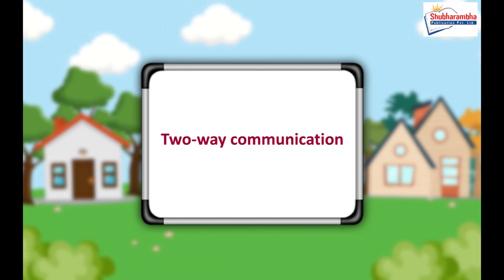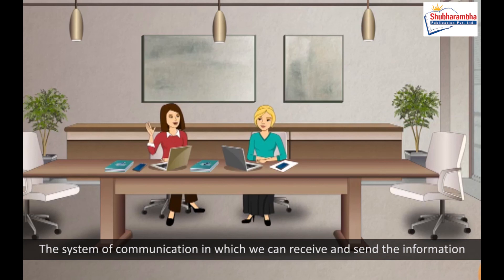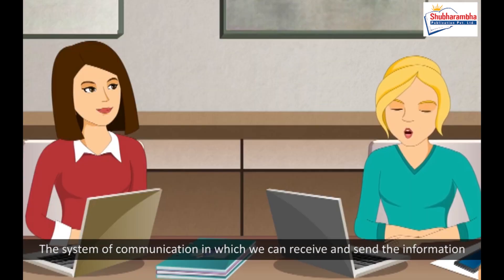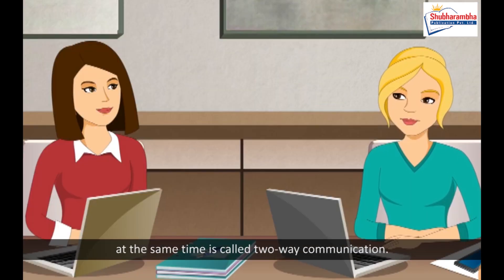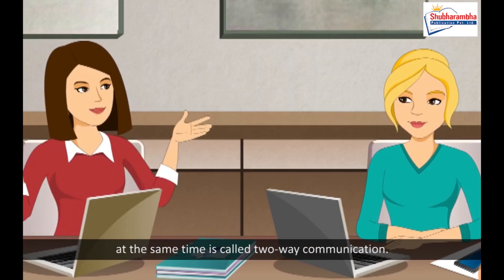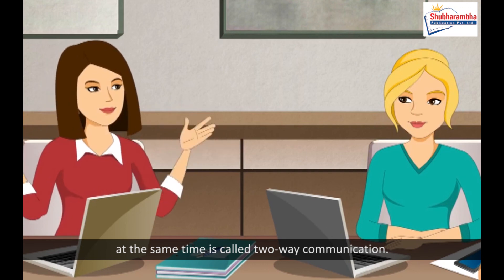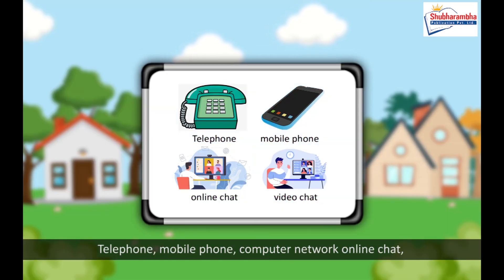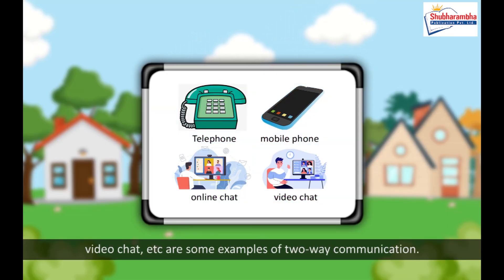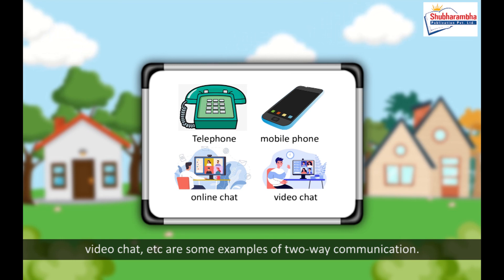Two-way communication. The system of communication in which we can receive and send information at the same time is called two-way communication. Telephone, mobile phone, computer network online chat, video chat, etc. are some examples of two-way communication.